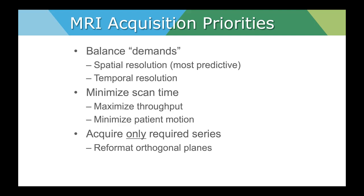An MRI is a fixed resource, and we need to keep in mind the amount of time that patients are in the magnet and the amount of time we dedicate to each individual exam — either to enhance throughput, decrease wait times, or improve the bottom line. We can minimize scan time and maximize throughput, which will also minimize patient motion. As with mammography, motion is the enemy of image quality. We should acquire only the sequences that are absolutely necessary — do not acquire anything superfluous.